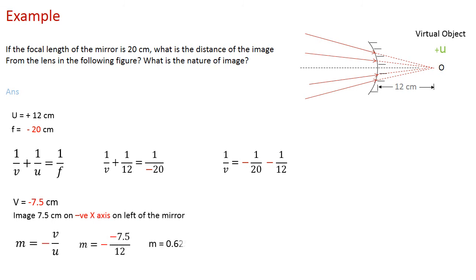When we put these values and solve, we get V is equal to minus 7.5 centimeter, which shows us that the image is formed on the negative x-axis on the left of the mirror. The magnification when we substitute the values of V and U, we get M is equal to 0.625, which means that it's a virtual image.